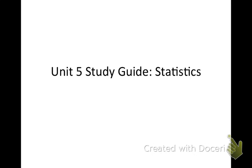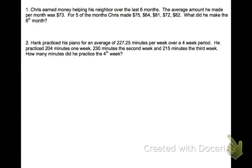Unit 5 study guide, problems number 1 and 2. So look at number 1. Chris earned money helping his neighbor over the last 6 months. The average, which we know is the mean, amount that he made per month was $73. For 5 of the months Chris made those amounts. What did he make the 6th month?